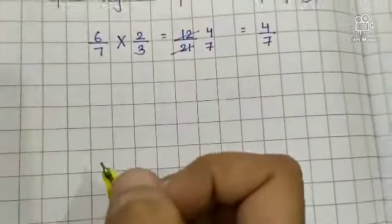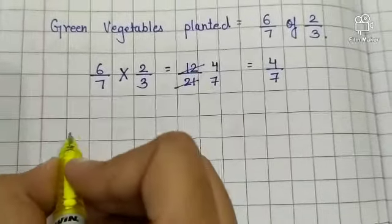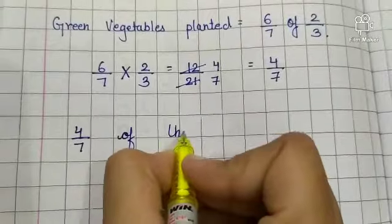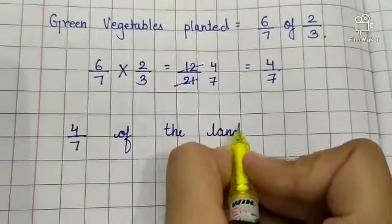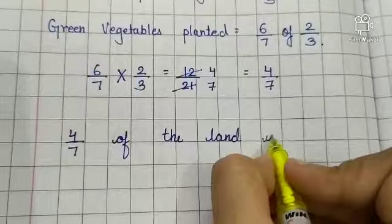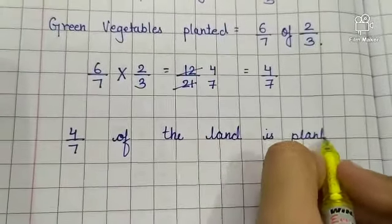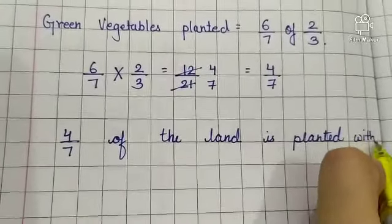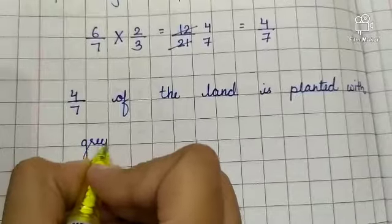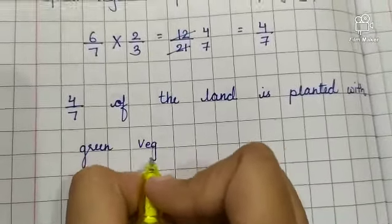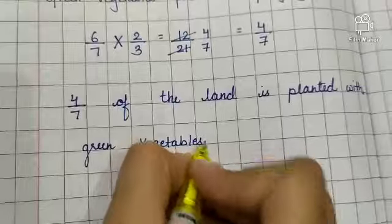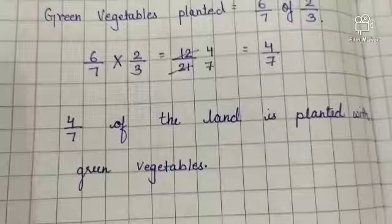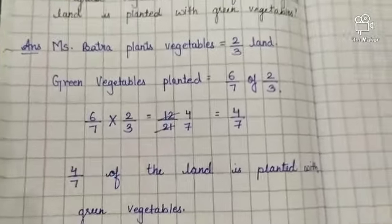Now write down one statement: 4 by 7 of the land is planted with green vegetables. Alright, complete this question.